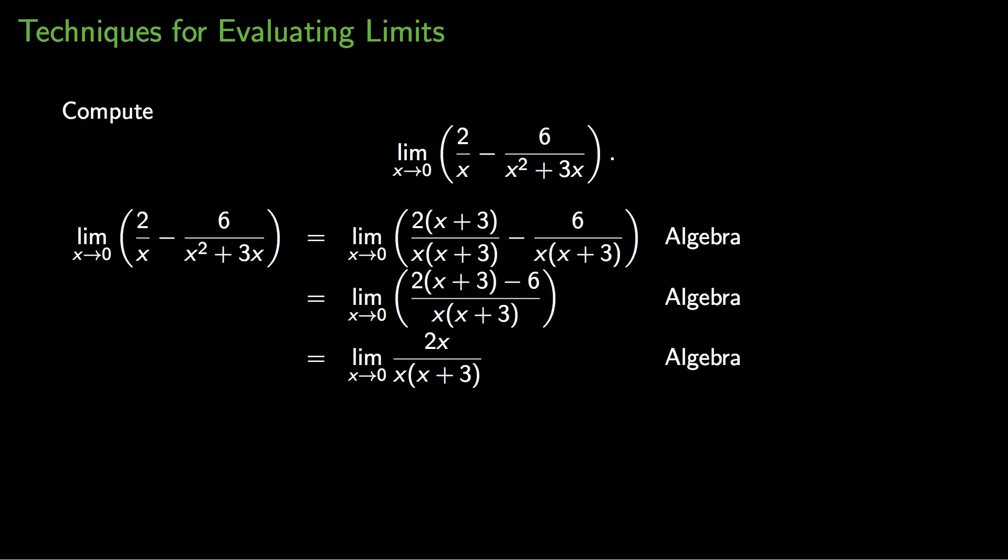Next, I'm going to do the obvious algebra to the numerator. You distribute the 2, you get 2x plus 6, and then you subtract the 6. So now I've actually combined the crazy initial expression into this much simpler single rational expression.